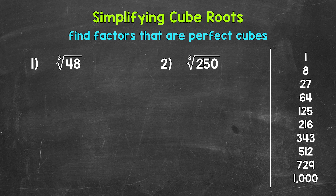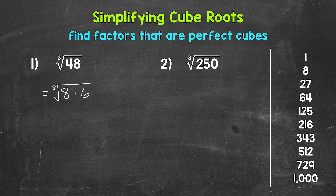So are any of the first 10 perfect cubes a factor of 48? Yes — 8 is a factor of 48. We know that 8 times 6 equals 48; 8 and 6 are factors of 48. So let's rewrite the cube root of 48 as the cube root of 8 times 6. Now the multiplication or product property of cube roots lets us split this into the cube root of 8 times the cube root of 6. This is still equivalent to the cube root of 48 — we're not changing the value of anything at all.